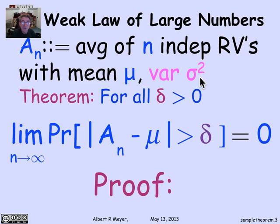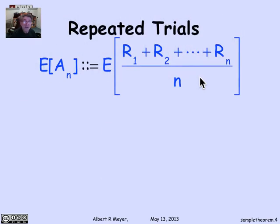So we're going to explicitly assume that all of these random variables have the same variance, namely the standard deviation sigma squared. And we'll be using that fact in the proof.